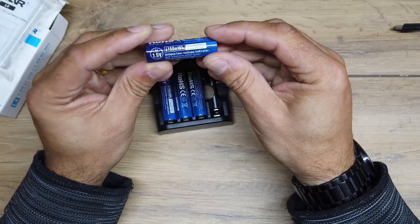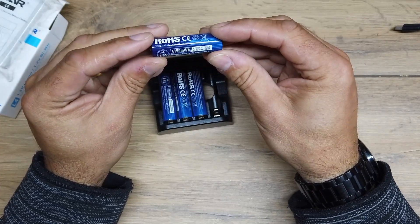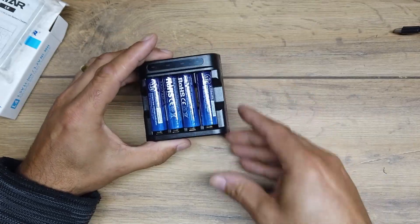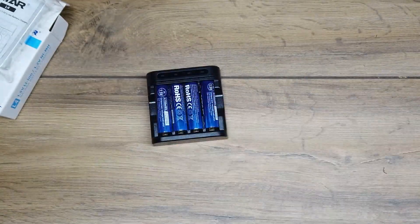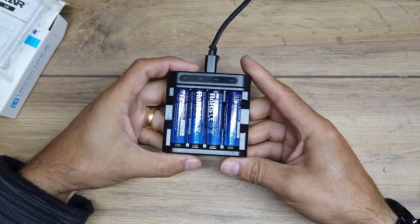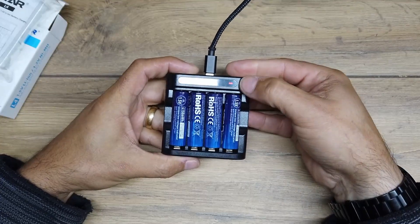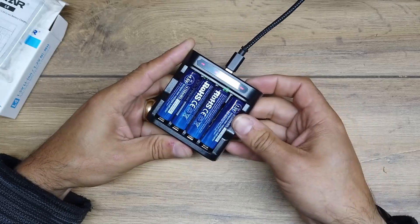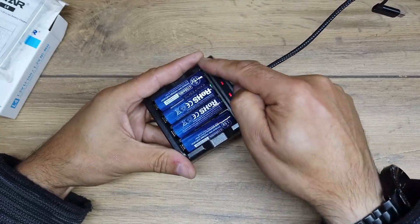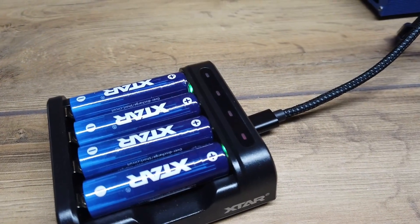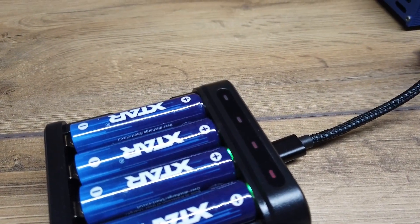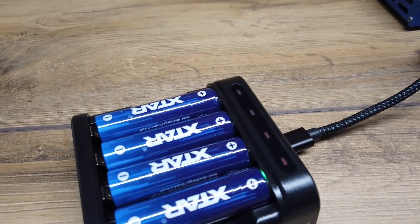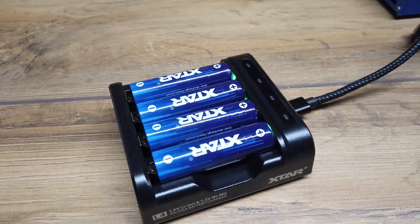Let's get these little beasties on charge. Let's plug them in and here we go, we go through a cycle and we have one, two, three, four red LEDs. We can see here the LEDs are flashing green on all of these batteries.